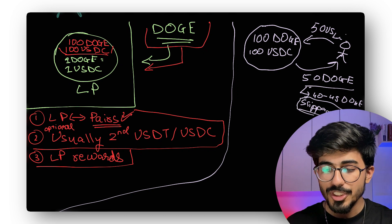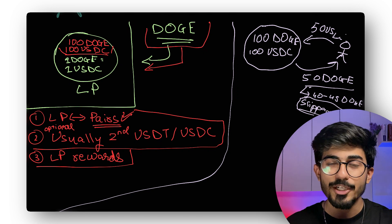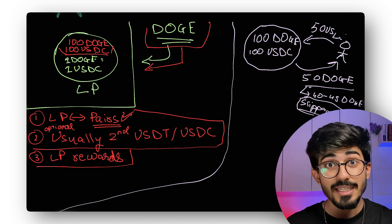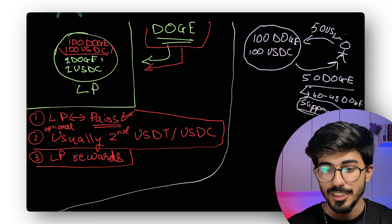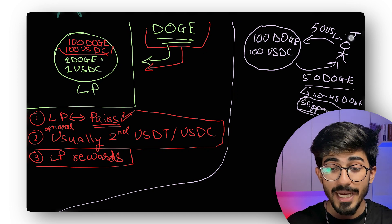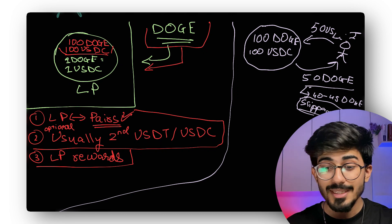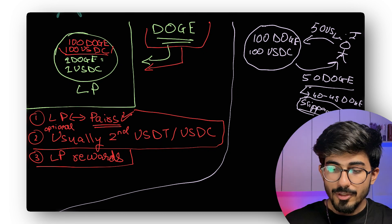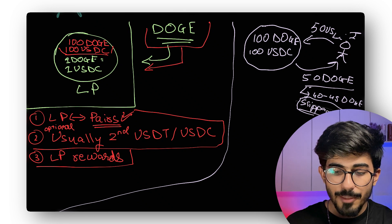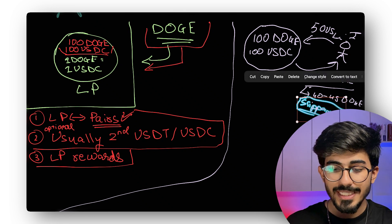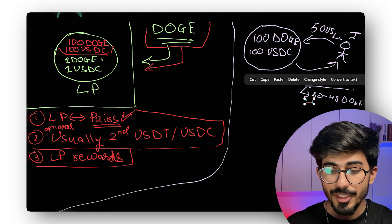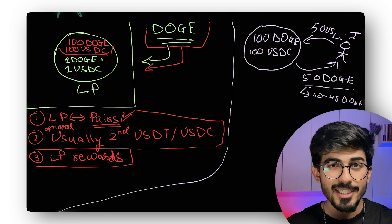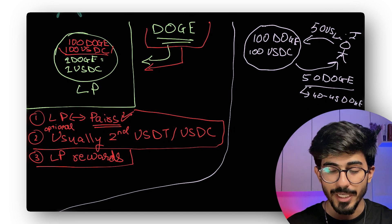But right now, you just need to understand that it is some kind of transaction fees. And that fees actually increases if you try to buy more of those tokens. If this investor was to buy just one Doge token, then the slippage would be much less. So just understand it right now as slippage is something which increases with the amount of tokens that you're trying to buy. With the bigger the transaction, the higher the slippage price.